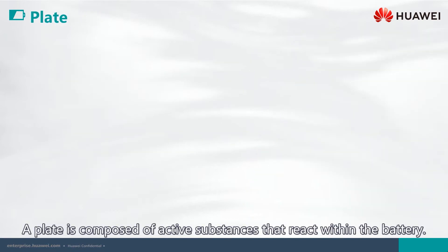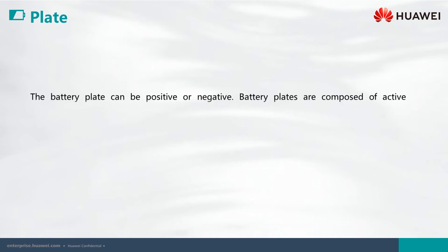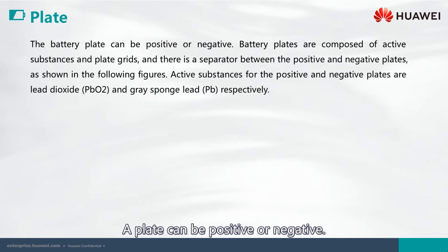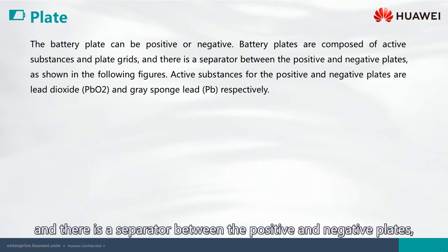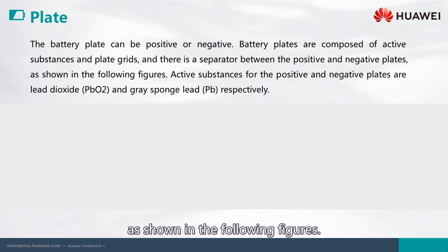A plate is composed of active substances that react within the battery. A plate can be positive or negative. They are composed of active substances and plate grids, and there is a separator between the positive and negative plates, as shown in the following figures.